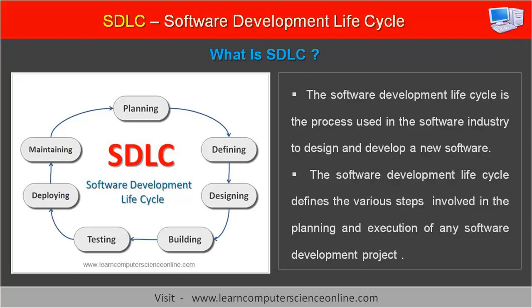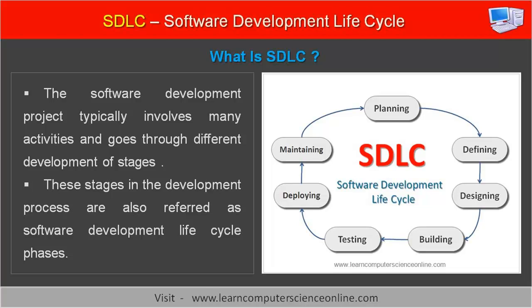The software development life cycle is the process used in the software industry to design and develop new software. It defines the various steps involved in the planning and execution of any software development project. The project typically involves many activities and goes through different stages, also referred to as software development life cycle phases.